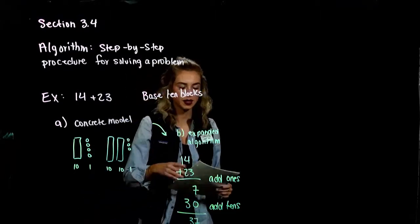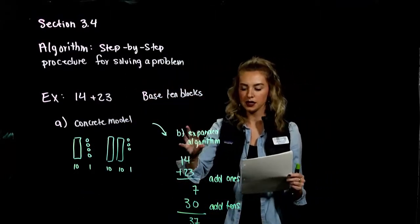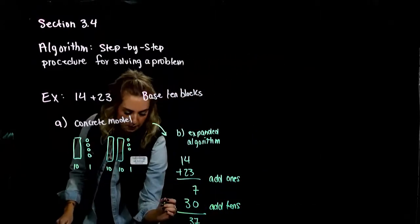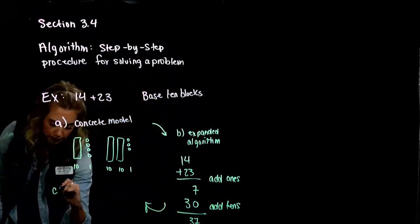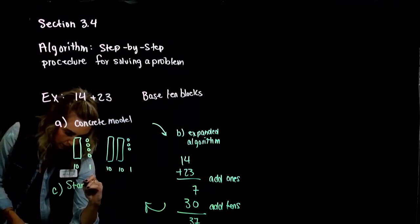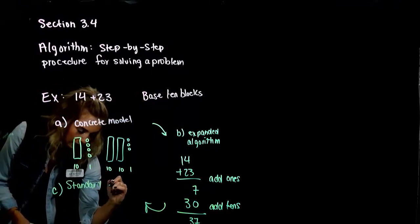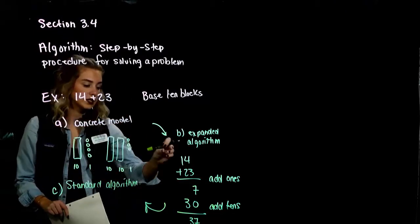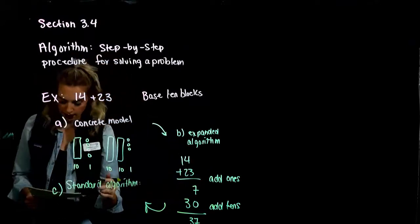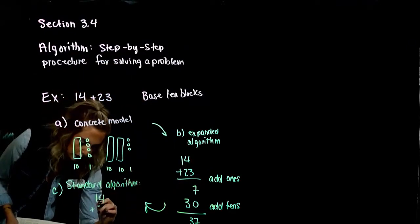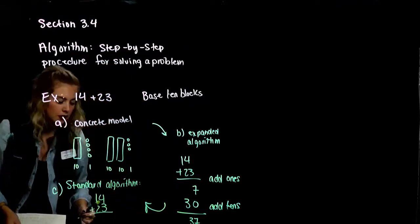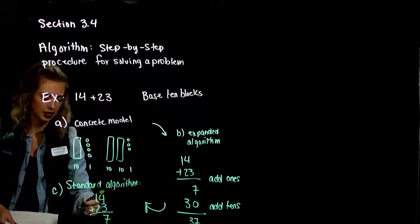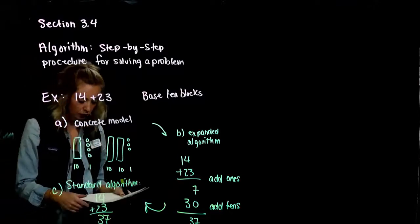We can move from a concrete model to an expanded algorithm, then migrate to our standard algorithm. The standard algorithm does each of those individual steps all at one time. If we've got 14 and 23, we can add the ones and then add the tens — but we do that all in one step.